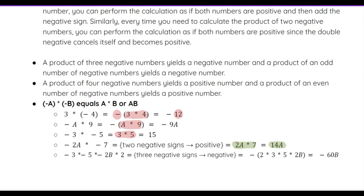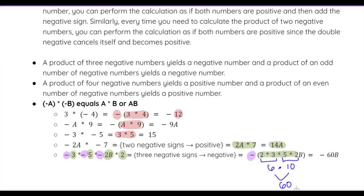For negative 2A times negative 7: we have two negative signs, a negative times a negative is positive, so we just think of 2A times 7. 2 times 7 is 14, so the answer is 14A. For negative 3 times negative 5 times negative 2B times 2: there are four numbers but three negative signs — an odd number of negatives means a negative answer. Multiplying the numbers without signs: 2 times 3 is 6, 5 times 2 is 10, and 6 times 10 is 60, with B remaining. Final answer: negative 60B.